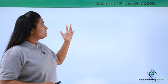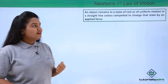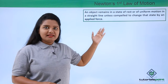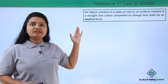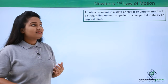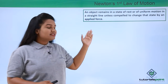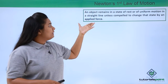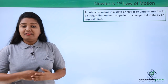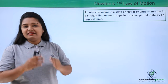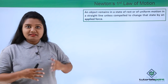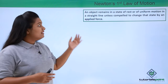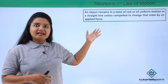According to Newton's first law of motion, it states that an object remains in a state of rest or of uniform motion in a straight line unless it is compelled to change that state by an applied force. This law basically means that an object continues to be in its currently existing state — whether a state of rest or of uniform motion in a straight line — and it resists any change in that state.